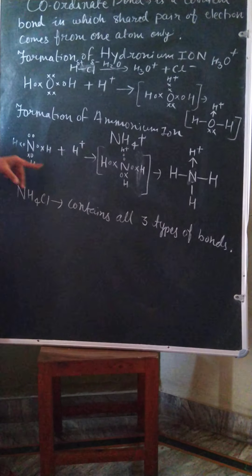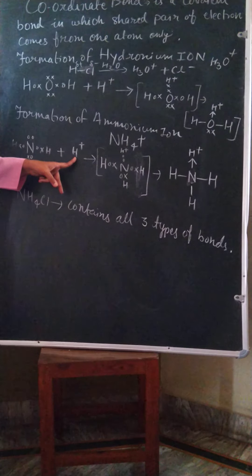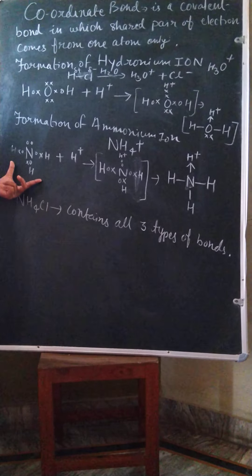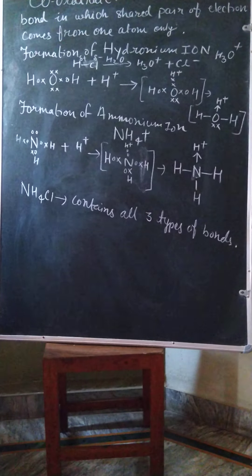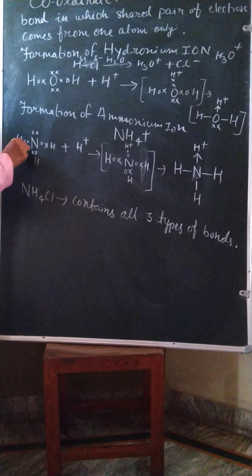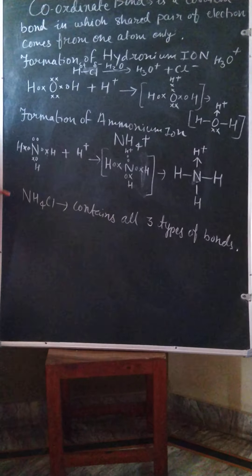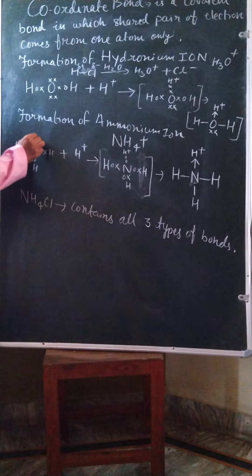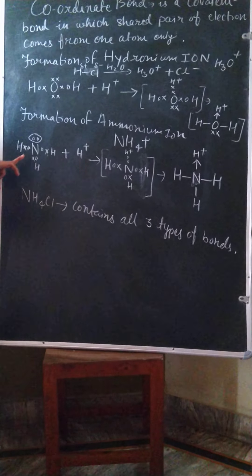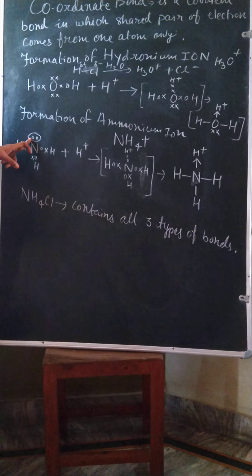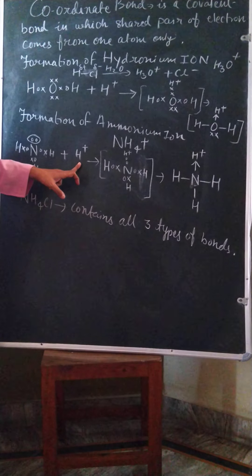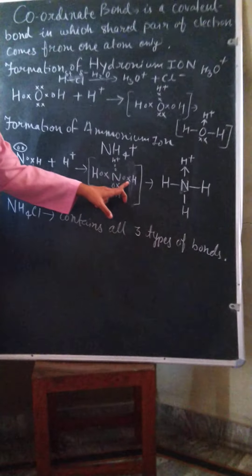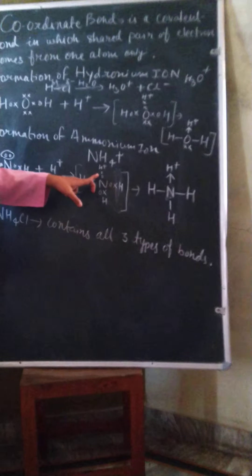The second example is the formation of ammonium ion, with formula NH4+. How is it formed? When H+ ion comes and combines with ammonia. This is the structure of ammonia, a covalent compound in which the central atom is nitrogen, having one lone pair of electrons. This lone pair of electrons is shared between nitrogen and H+.